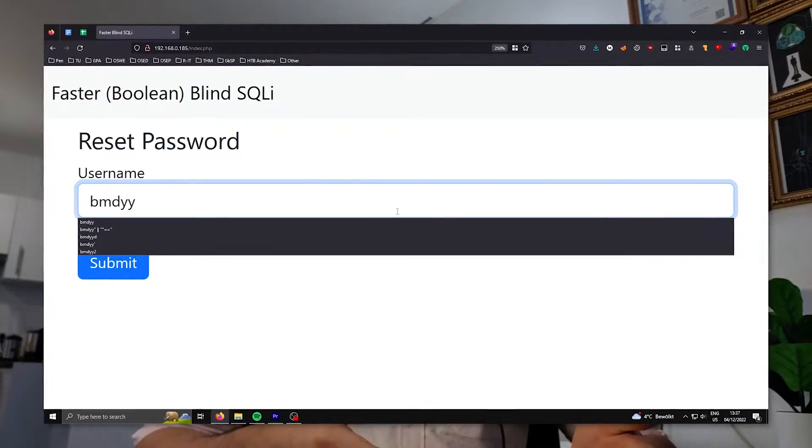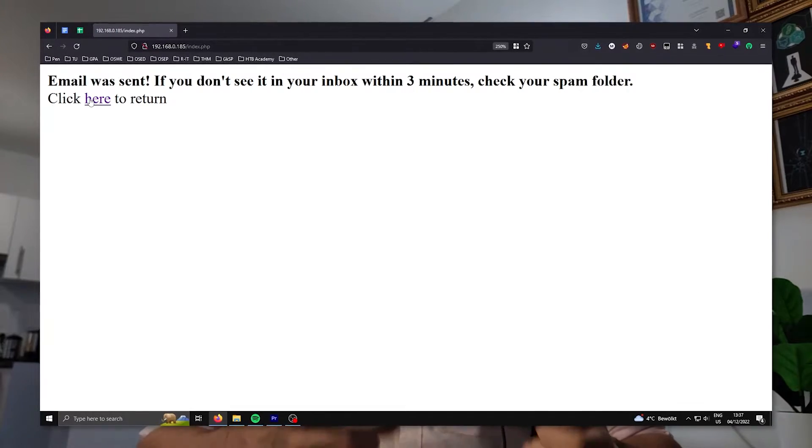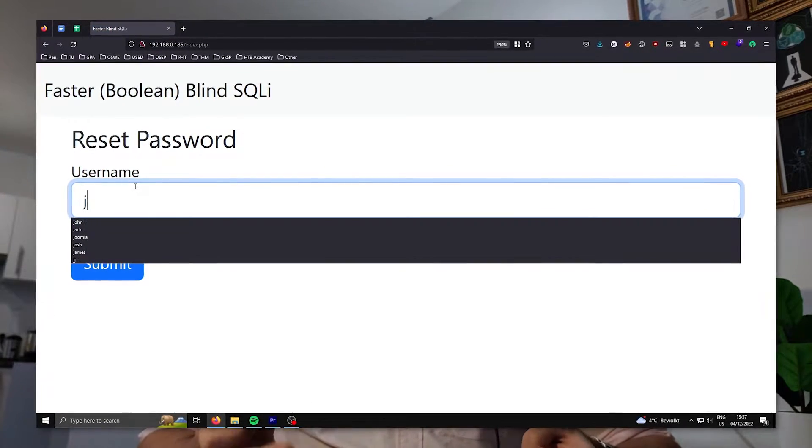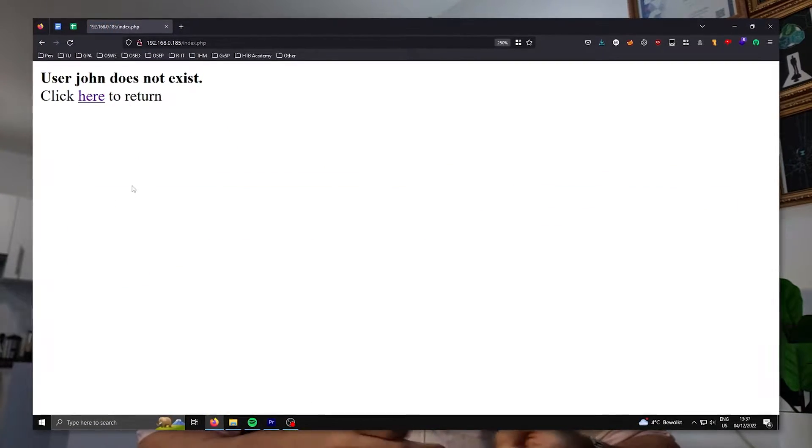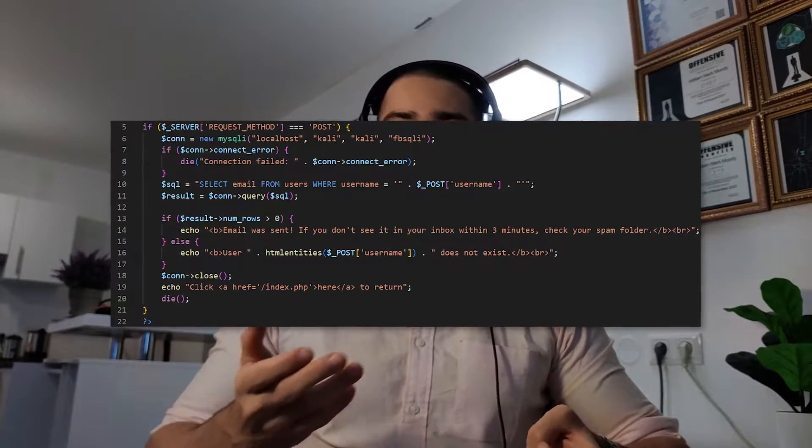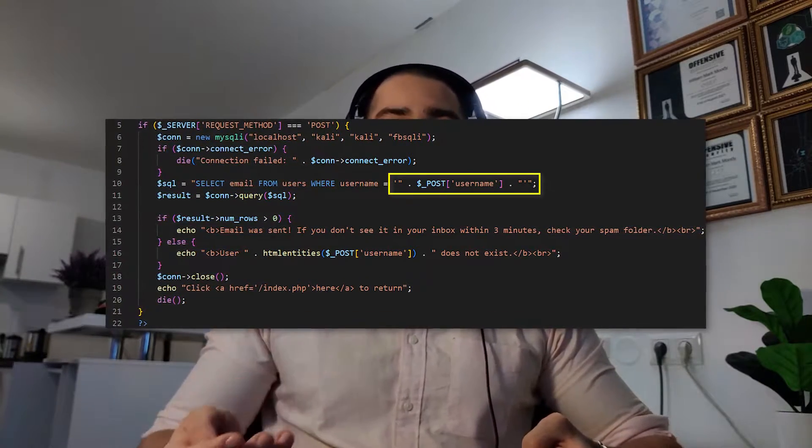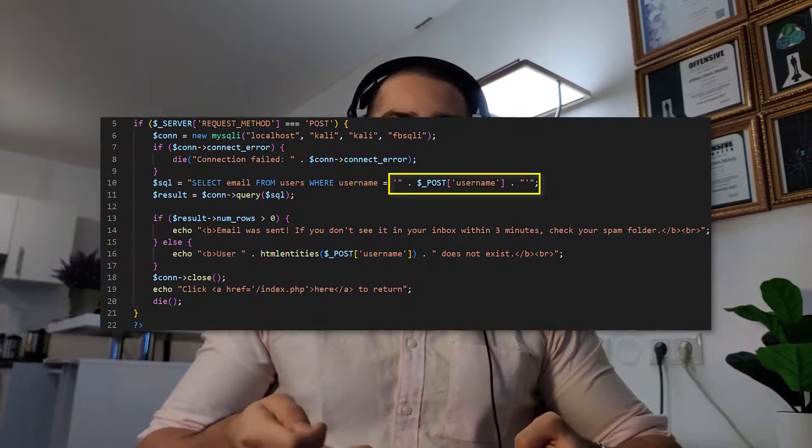I first had to set up a target website which is vulnerable to a boolean blind SQL injection. I decided upon a password reset form where you enter a username, submit the form, and the server responds differently depending on if a user exists in the database. The SQL injection in this case happens because the server inserts the username parameter into the SQL query without any sanitization.